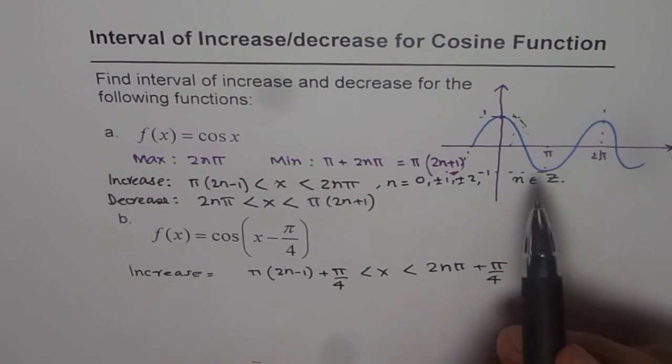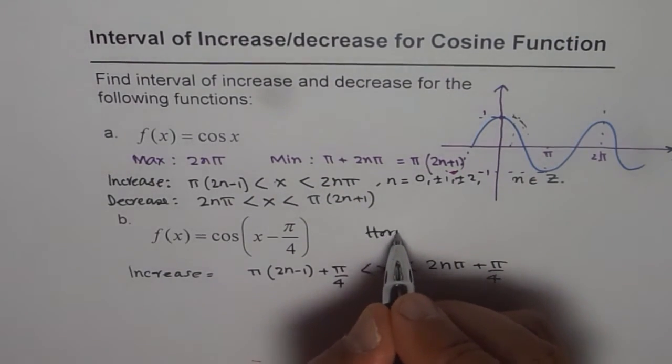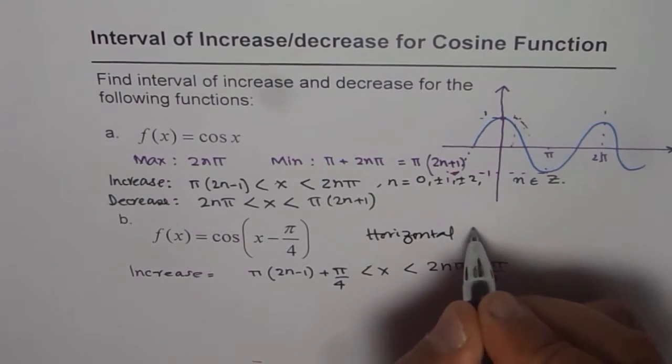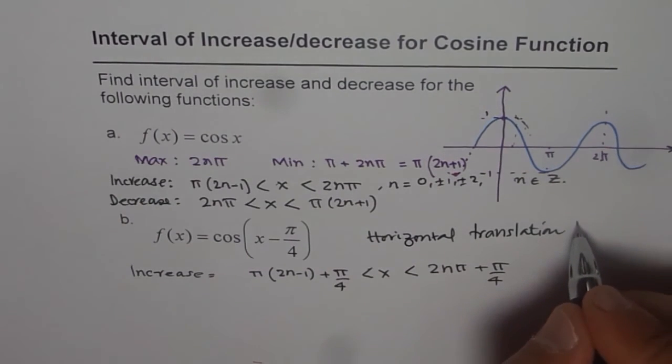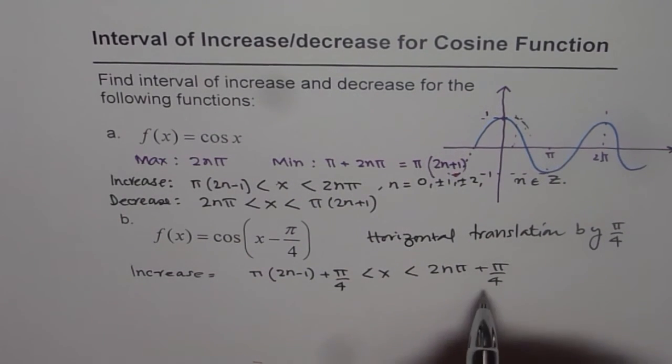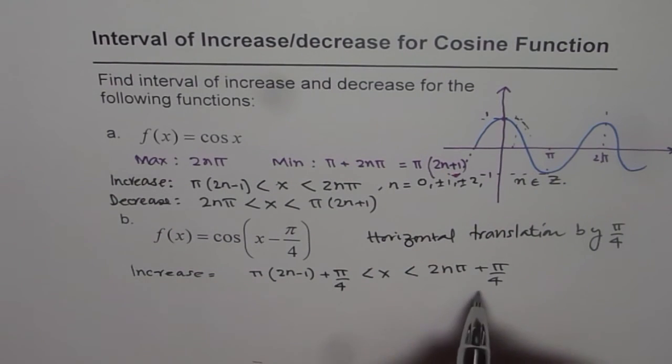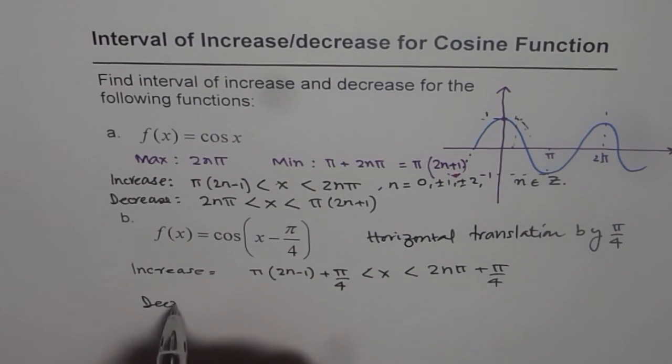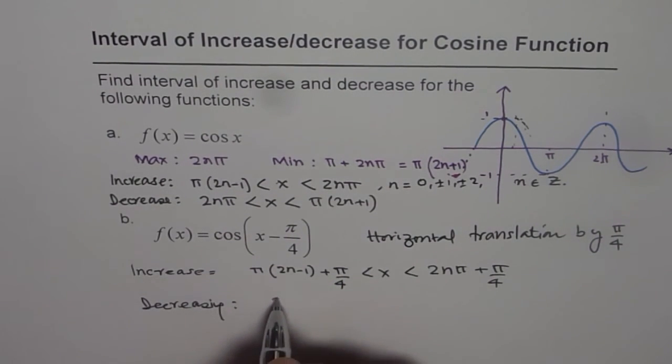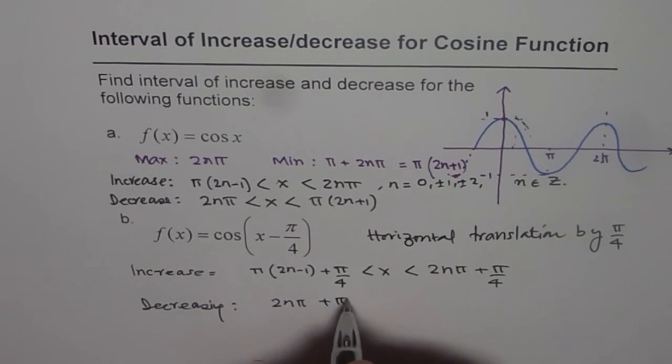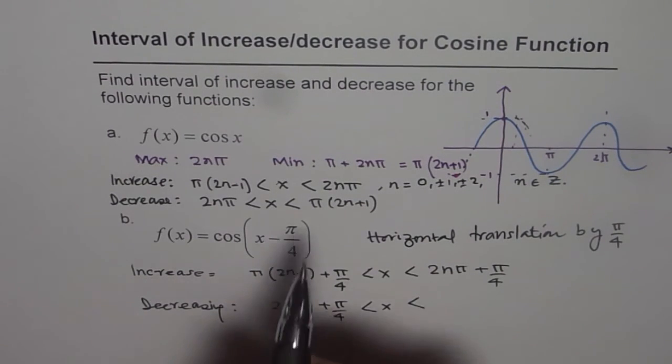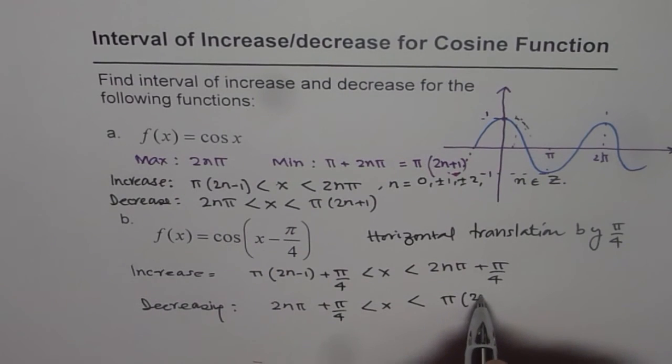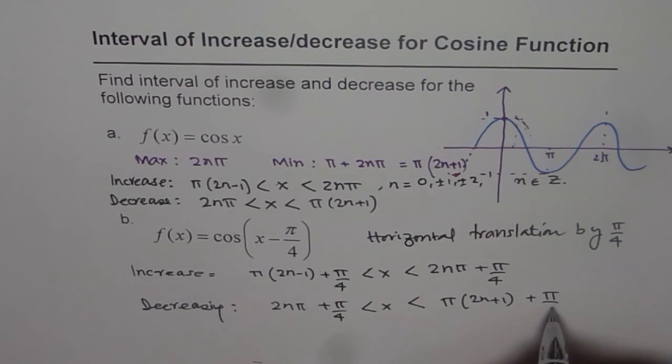Because it's a transformed function, and this is horizontal translation by pi by 4. So we'll add pi by 4 to our answer. This is interval of increasing, and interval for decreasing will be 2n pi plus pi by 4, and less than pi times 2n plus 1 plus pi by 4. So that is how you can answer this question.